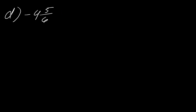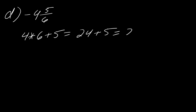One more practice problem. Taking negative 4 and five-sixths: 4×6=24, plus 5 equals 29, so this is negative 29 over 6. A quick gut check: 6 goes into 29 four times, so we're good.